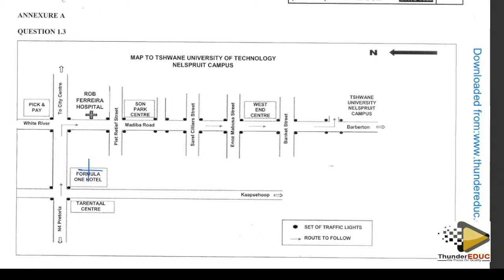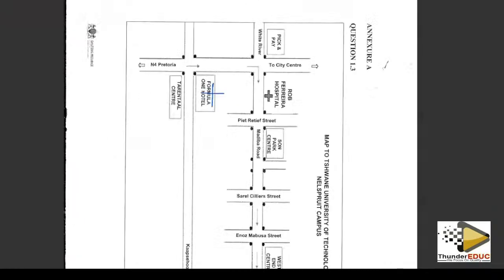Take note of where north is — the northern part is this. So from Formula 1 Hotel, travelling to Pick and Pay, the general direction is north-east.